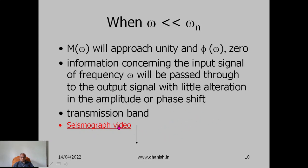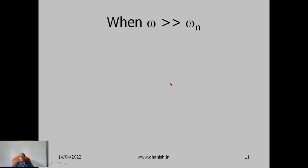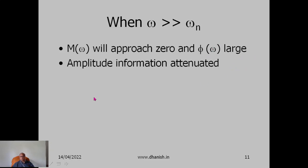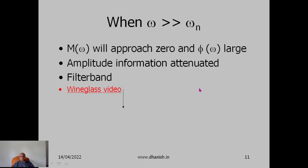Seismography is actually not in this transmission bandwidth region — it measures vibrations of the earth. When signal frequency is very large, the magnitude ratio will be close to 0 and the lag will be large (approximately −π), so the amplitude information is attenuated to almost 0. This region of frequency is called the filter bandwidth. In the wineglass video example, the wineglass is kept on a table subjected to vibrations, but the vibrations are not transmitted because there is an isolating device in between.